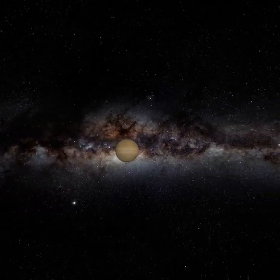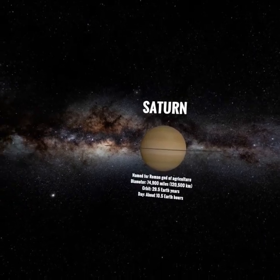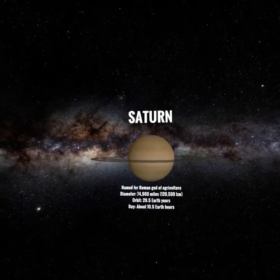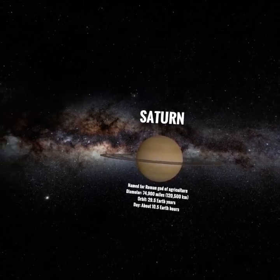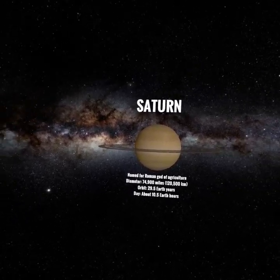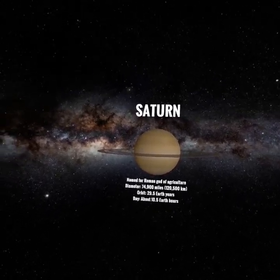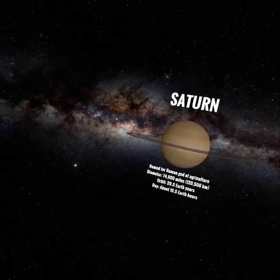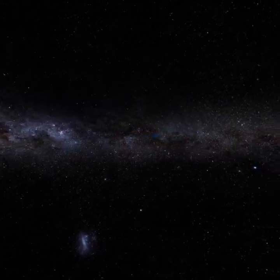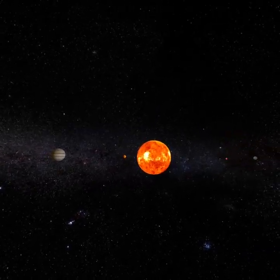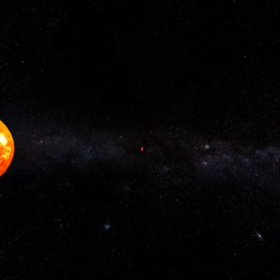We can get closer to planets, and at a certain point if we want to know more information about them we push the trigger on the controller. The trigger makes the planets stop orbiting so we can read the information — it shows up and stays there as long as we need. When we're ready we release the trigger, which lets the planets resume their orbit around the Sun.